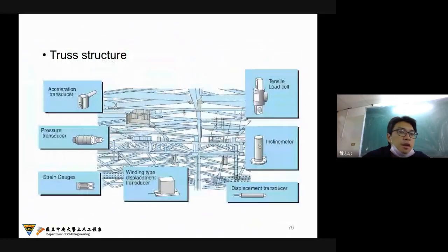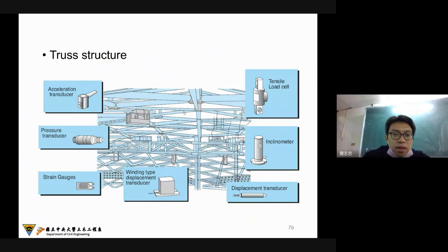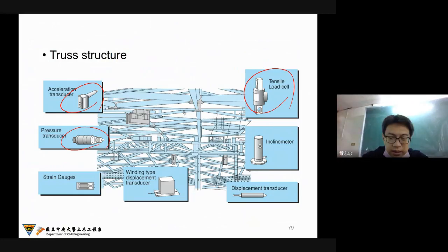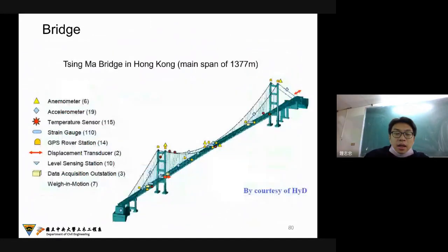And of course, if you have a truss structure — like a sports center — similar to the deep excavation case, you may need acceleration, pressure like a load cell, also a tensile load cell for tension, and also inclinometer and displacement. This is for the truss structure monitoring.